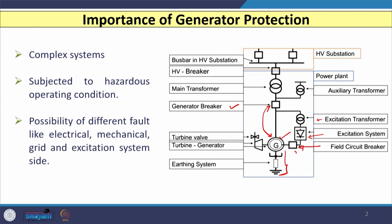The generator also has a turbine generator mechanism. The prime mover or turbine is there along with the turbine valve, which can change the mechanical input given to the turbine, and accordingly the power generated by the alternator can be changed. All these systems are connected with the main transformer, known as the generator transformer or GSU. An auxiliary transformer is also there — if the main transformer fails, the auxiliary transformer can be used. Then you have the high voltage breaker and bus bar systems.